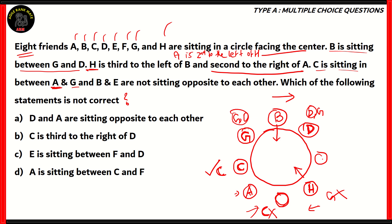Now looking at the next statement: B and E are not sitting opposite to each other. The position opposite B is currently empty, so E cannot be placed there. The only remaining spot for E is one of the other empty positions. So E is placed there, and the only remaining friend is F, who fills the last spot. Now all eight friends — A, B, C, D, E, F, G, and H — are seated in the circle.